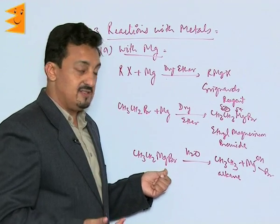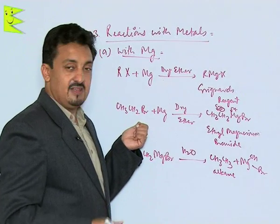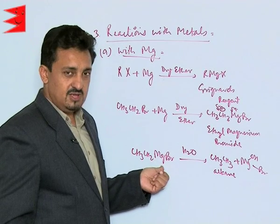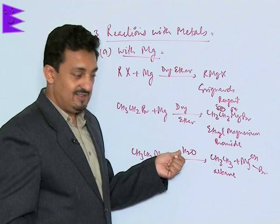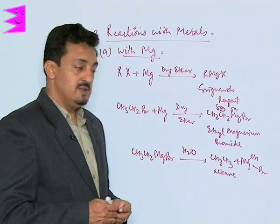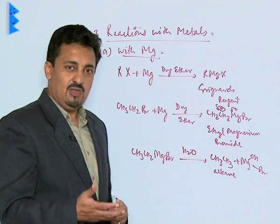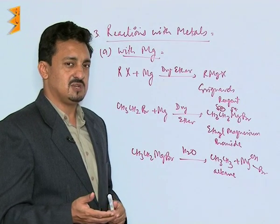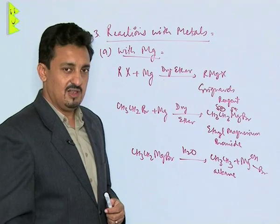We try to avoid aqueous medium; wherever Grignard's reagents are prepared, they should be completely free from water because they react completely with active hydrogen-containing species to form alkane and magnesium hydroxy bromide. We will later learn many more reactions of Grignard's reagents, including nucleophilic substitution on carbonyl compounds leading to the formation of higher degrees of alcohols.